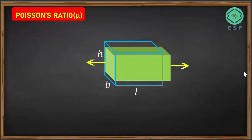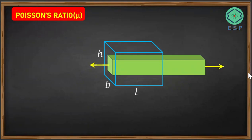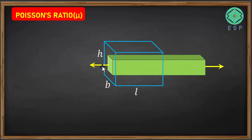As the member is further elongating, its height and width is reducing, as you can see in this diagram. So when we apply a tensile load along its length, the length has been increased but its height and width have been reduced. There is an elongation and there is a reduction in the height as well as the breadth of this particular member.